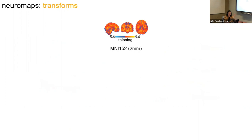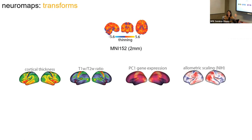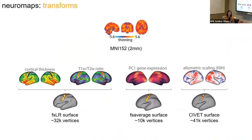Here's an example: a deformation-based morphometry map of schizophrenia case versus control — think of it as cortical thinning. Let's say you want to compare this volumetric map in MNI152 2mm space to cortical thickness, T1/T2, first principal component gene expression, and an isometric scaling developmental expansion map. But cortical thickness and T1/T2 are in FSLR 32K surface; PC1 gene expression is FS average at 10,000 vertices per hemisphere; and this one is CIVET at 41,000 — so it's a mess. That's where we provide transformation tools.